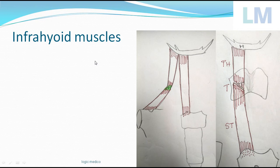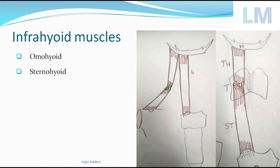Infrahyoid muscles are four in number on either side of the neck, so totally there are four pairs. They are: omohyoid — from the shoulder blade bone to the hyoid bone, it's called omohyoid. Sternohyoid — from the sternum to the hyoid, it's called sternohyoid.